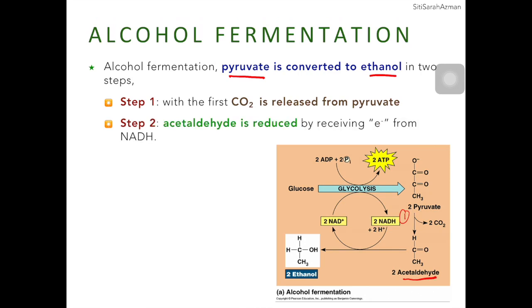The second step of alcohol fermentation is a redox reaction. The molecules involved in this redox reaction are the NADH molecule and acetaldehyde. Acetaldehyde will be reduced into ethanol, while the NADH molecule will be oxidized. Since they lose electrons, NADH becomes NAD+.